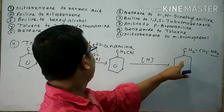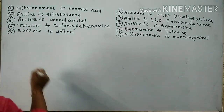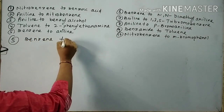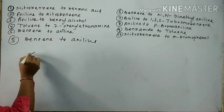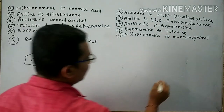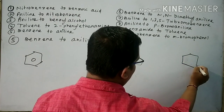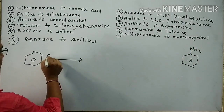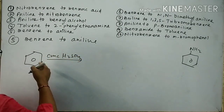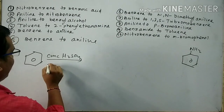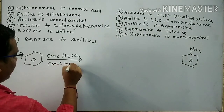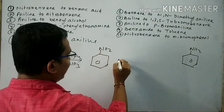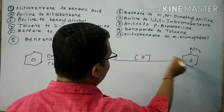To repeat: toluene reacts with chlorine in presence of sunlight to form benzyl chloride. Benzyl chloride reacts with alcoholic KCN to form benzyl cyanide. Benzyl cyanide undergoes reduction to give 2-phenylethanamine. Question number 5: Convert benzene to aniline. Benzene is subjected to nitration with concentrated H2SO4 and concentrated HNO3 to form nitrobenzene. Nitrobenzene undergoes reduction to give aniline.